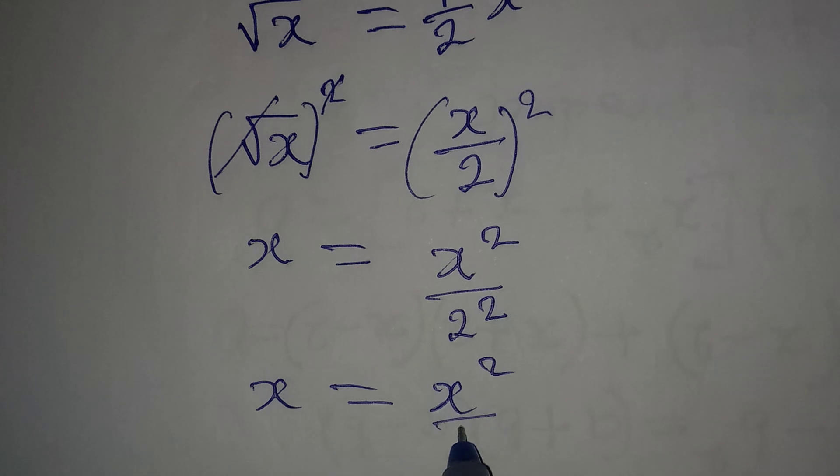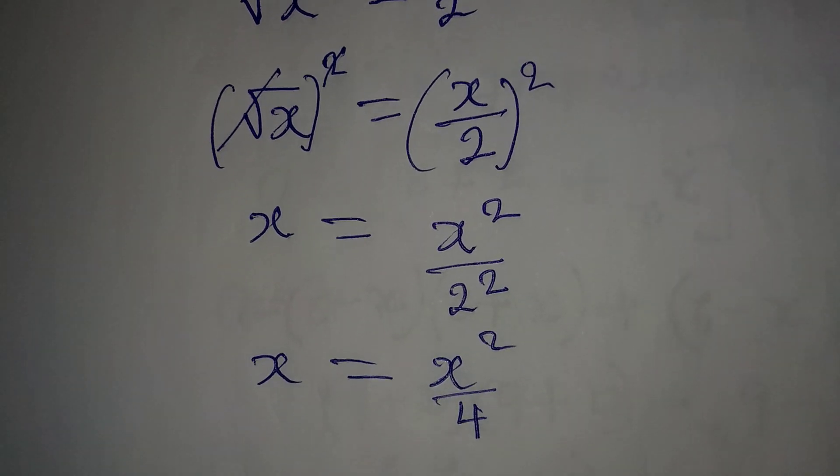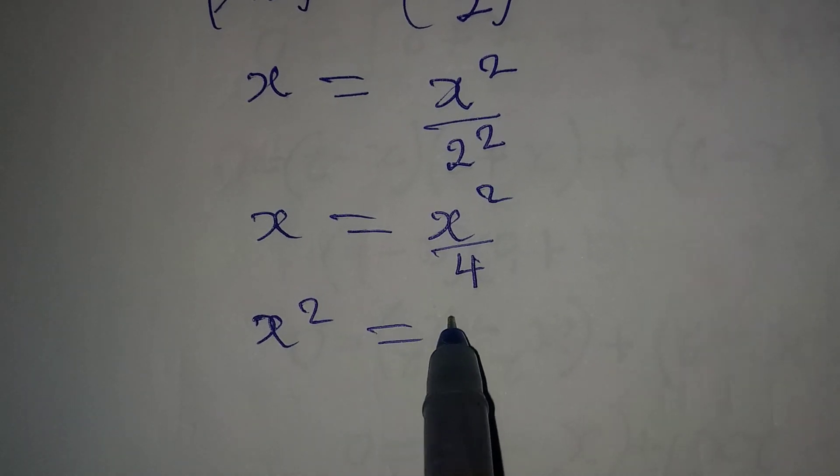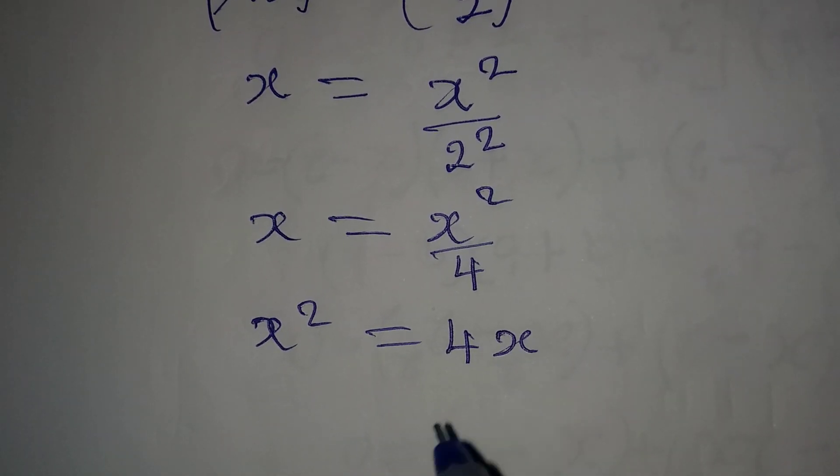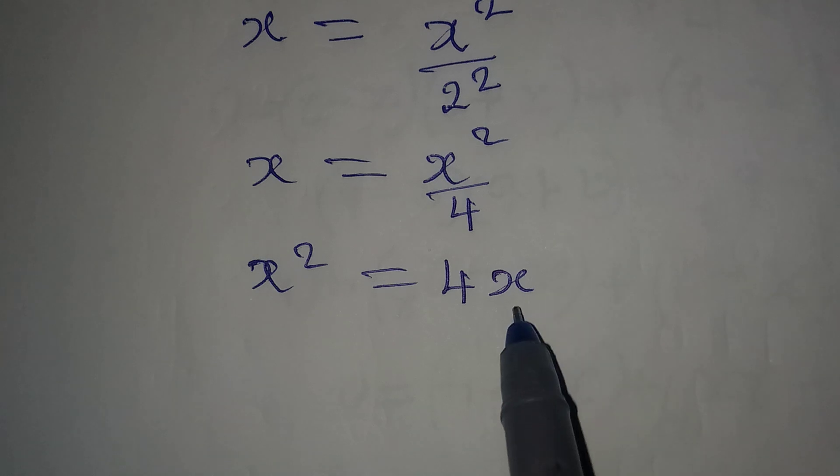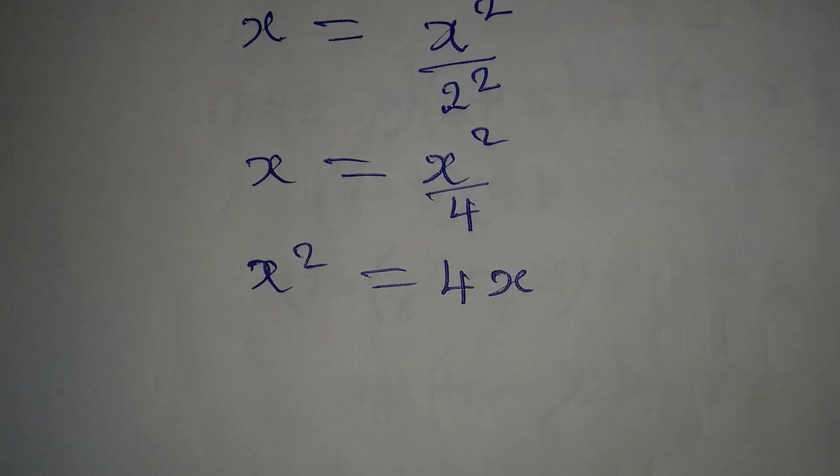Cross multiply so that x² = 4x. Now what can I do from here? Bring this to the left, because if I cancel this and cancel one of this, it's going to be wrong.